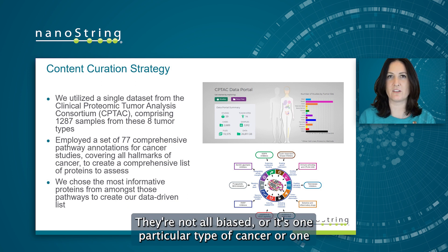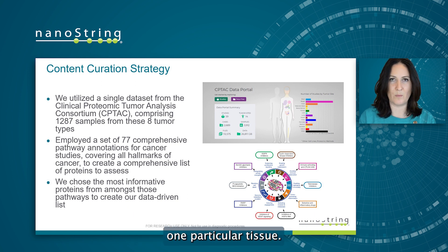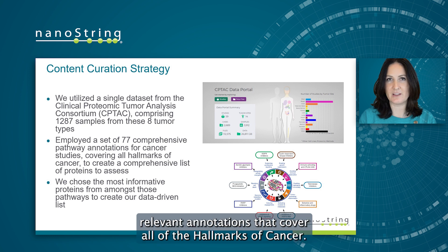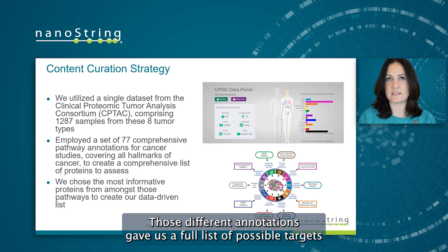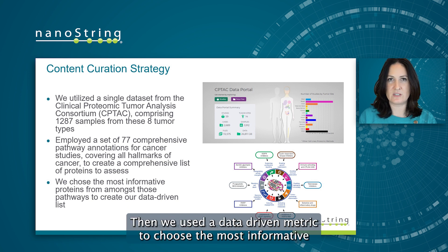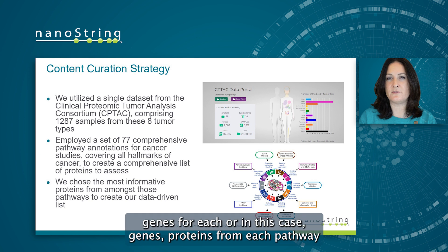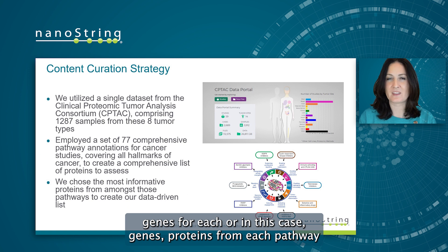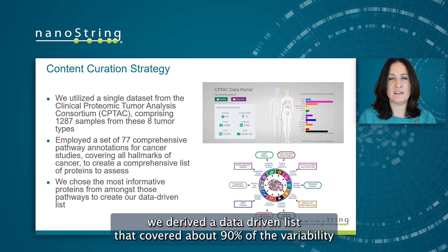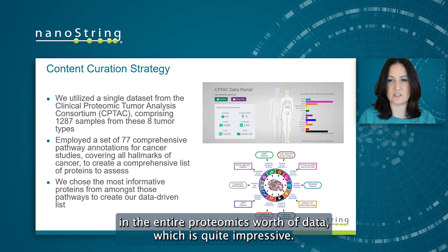They're not all biased towards one particular type of cancer or one particular tissue. We employed a curated set of 77 different cancer-relevant annotations that cover all of the hallmarks of cancer. Those different annotations gave us a full list of possible targets to consider from the proteome data. We then used a data-driven metric to choose the most informative proteins from each pathway, and in the end derived a data-driven list that covered about 90% of the variability in the entire proteome's worth of data.